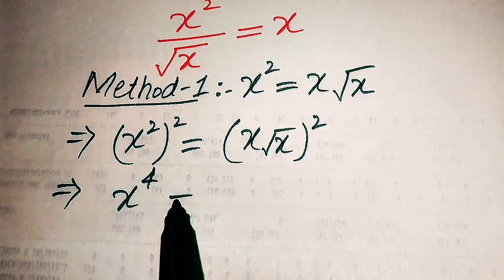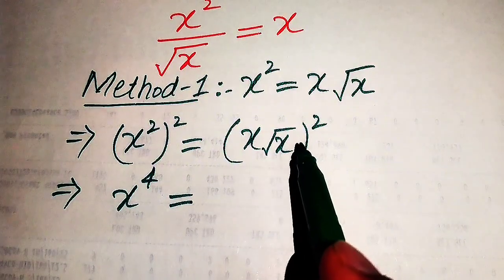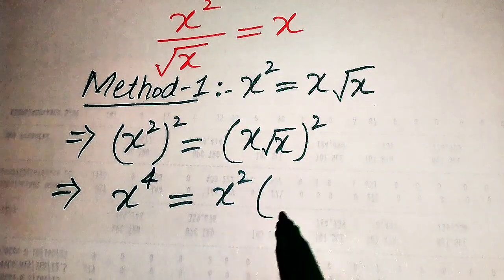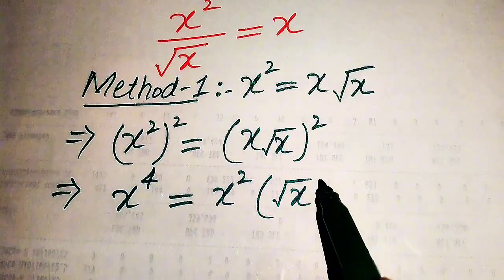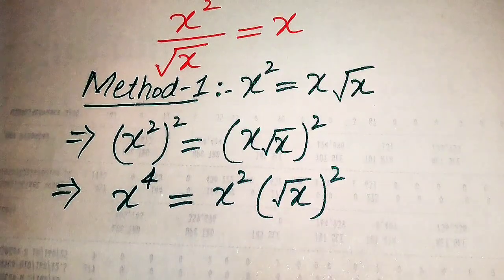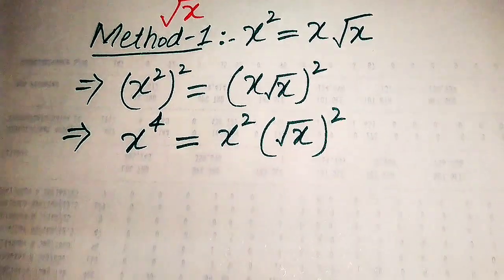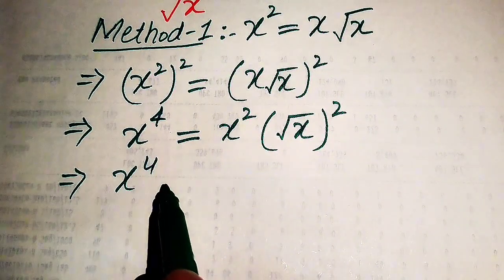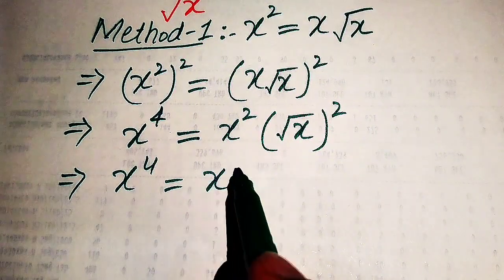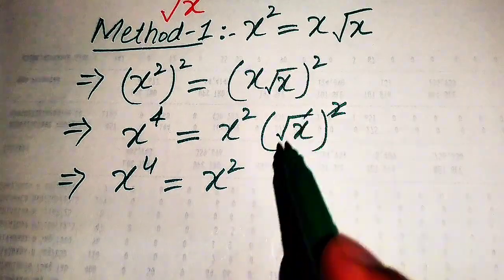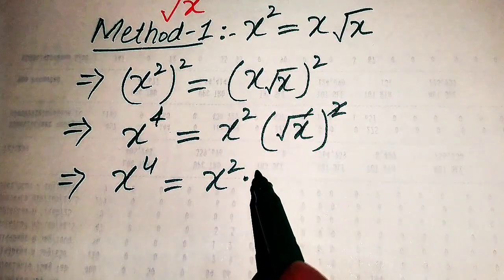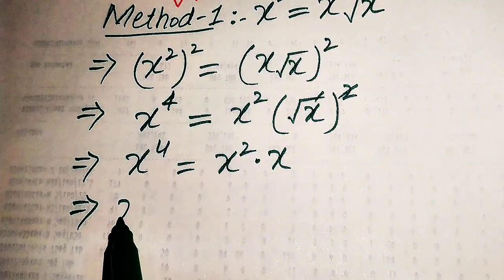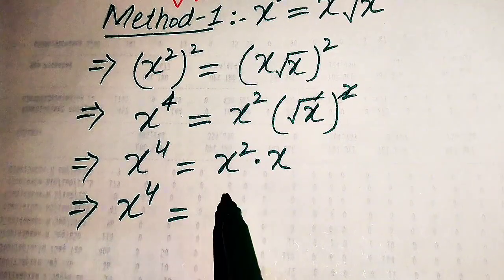The left side (x²)² becomes x to the power of 4. On the right side we apply the square sign separately on both values, giving x² times (√x)². Since the square root and the square cancel each other, we get x to the power of 4 equals x squared times x, which simplifies to x to the power of 4 equals x cubed.